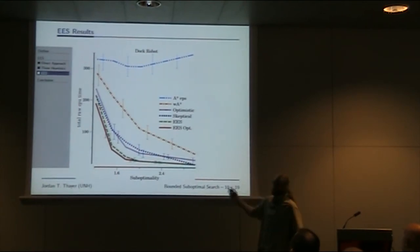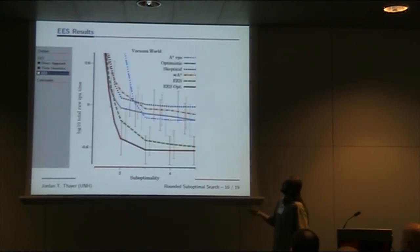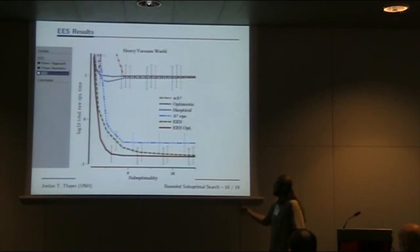The next domain is Vacuum World, the first search space example from Russell and Norvig. A robot moves around a grid and sucks up dirt. X-axis is suboptimality bound, y-axis is CPU time on a log scale. The two variants of EES are substantially faster than the other algorithms. If sucking up dirt makes it harder to move the robot, the small difference becomes a couple orders of magnitude. A-star epsilon is competitive in this domain but exploded earlier on dockyard. It doesn't work on grids. It can perform well but isn't consistent, whereas EES performs well consistently.